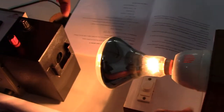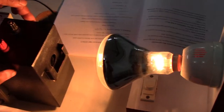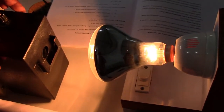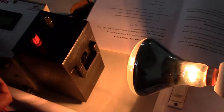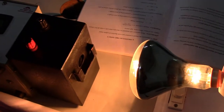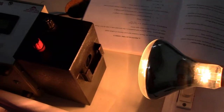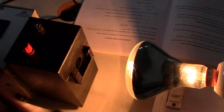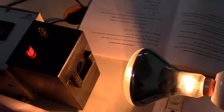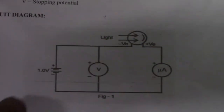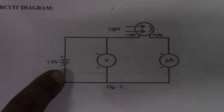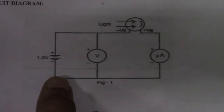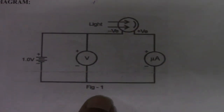This is the source of light. When switched on, it produces photons. These photons fall on the photosensitive metal and eject electrons. Those electrons are redirected through the ammeter so that it gives a current.